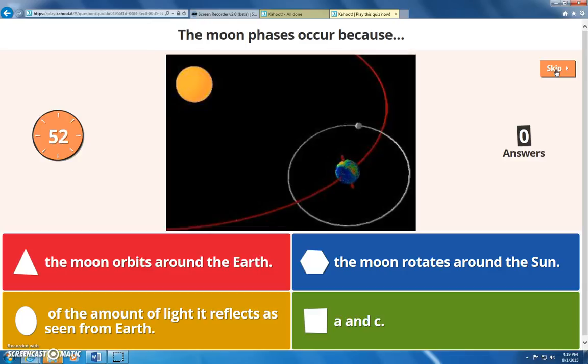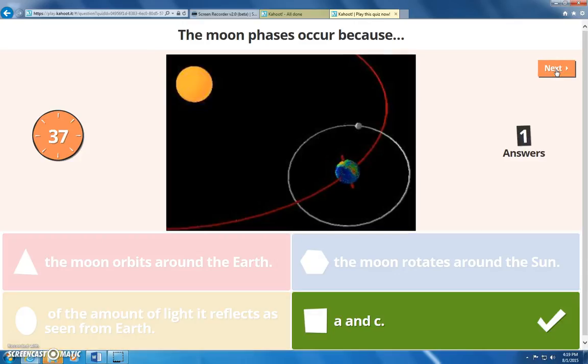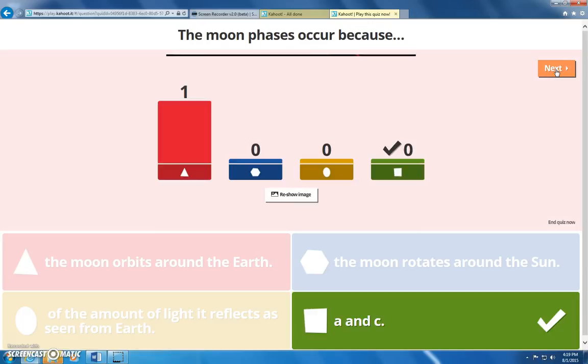Why do the moon phases occur? Do they occur because the moon orbits around the earth? Because the moon rotates around the sun? Or because of the amount of light it reflects as seen from earth? So, you are partially right. The moon does orbit around the earth, but another really big factor in why the moon phases occur is because of the amount of light we see from earth that it reflects.